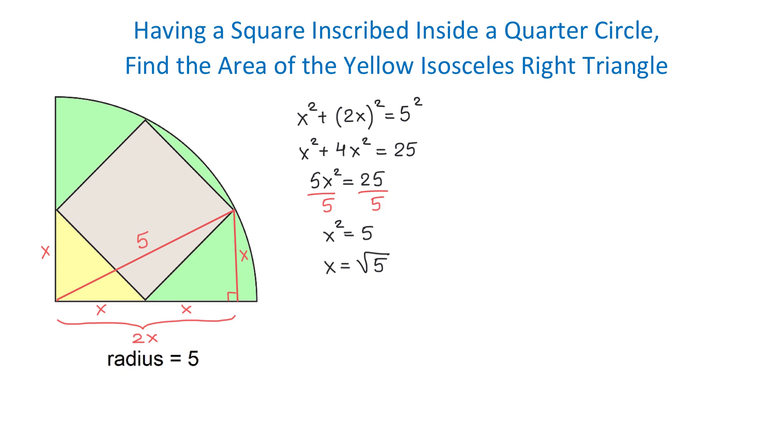Now, once we have x, let's find the area of the yellow triangle using the formula A = 1/2 × base × height. In this formula, the base is √5 and the height is also √5.